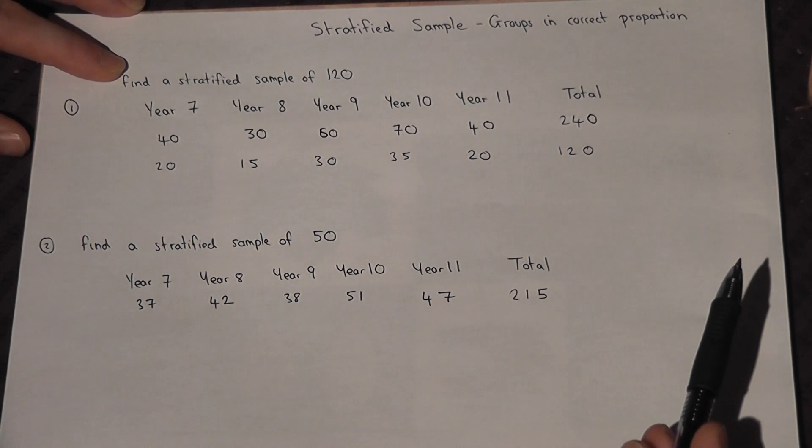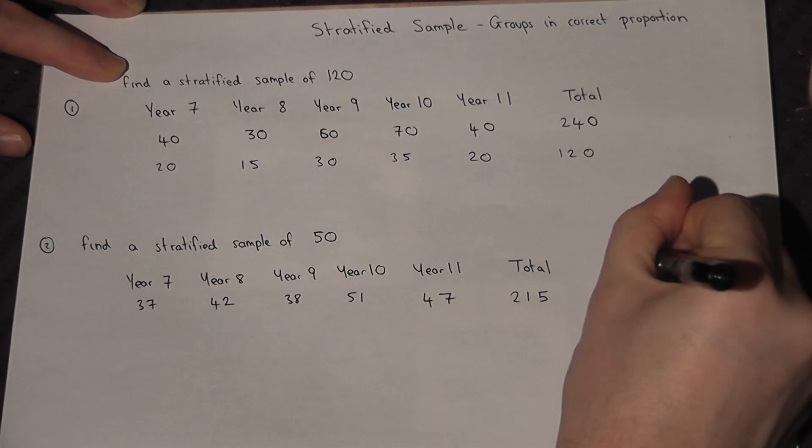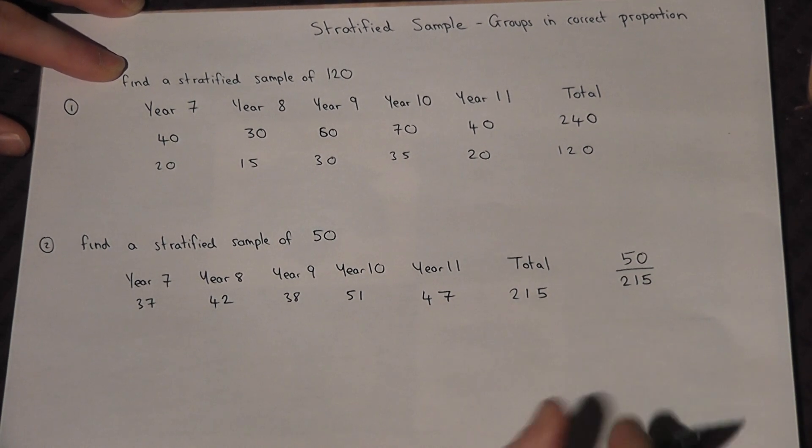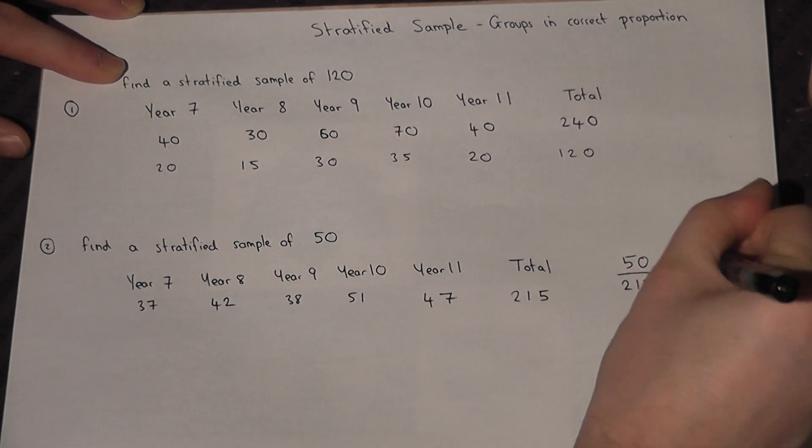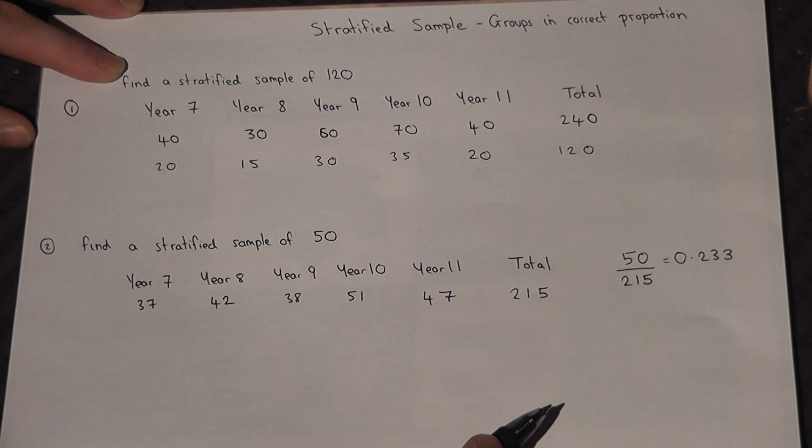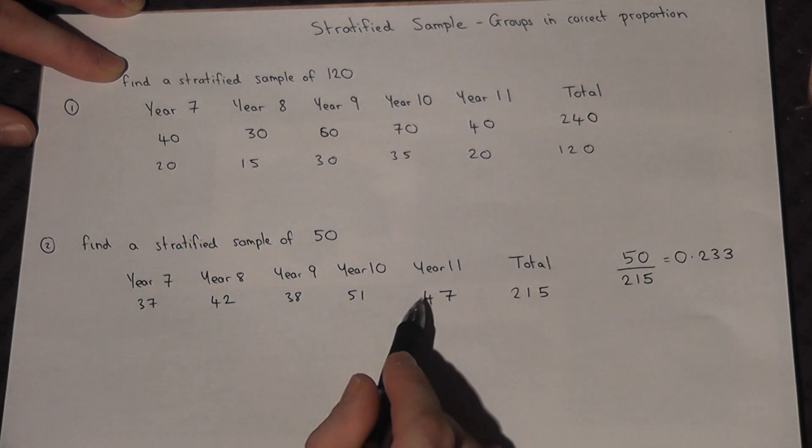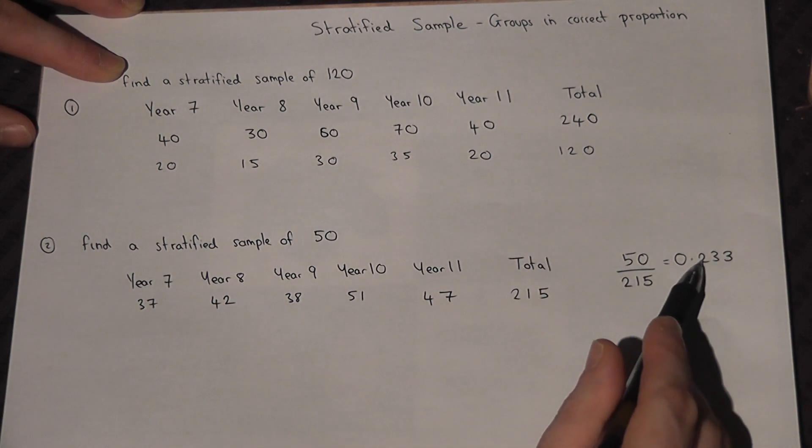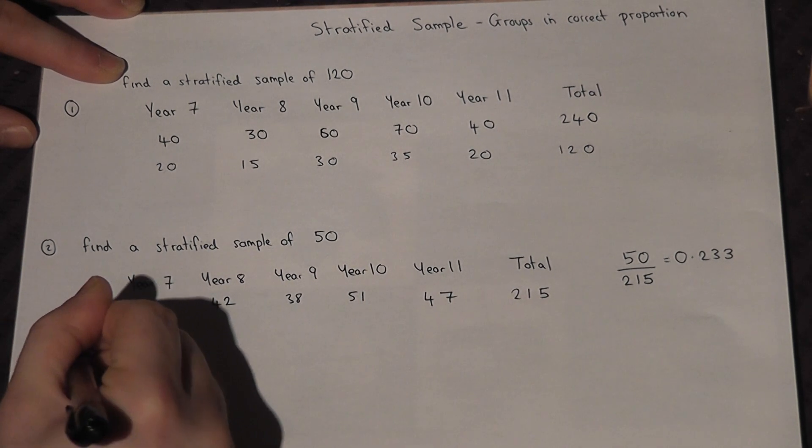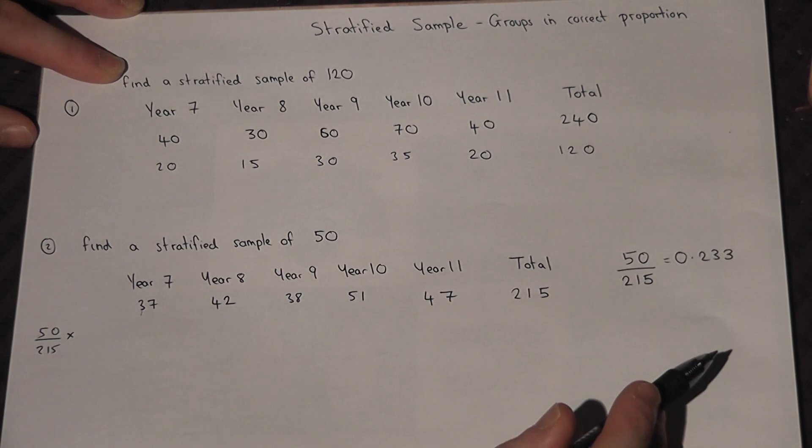Now then what you do is you work out the sample size divided by the total. So the sample divided by the total, which can be left as a fraction or as a decimal if you work it out. In this case, 0.233 to 3 decimal places. We then multiply each individual group by this decimal or fraction.